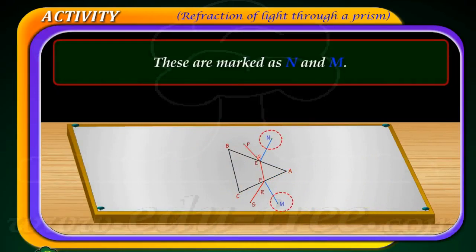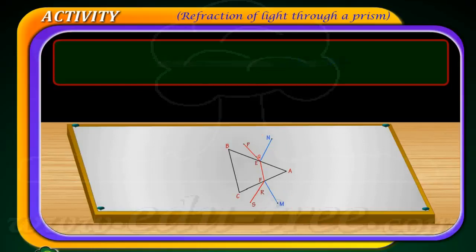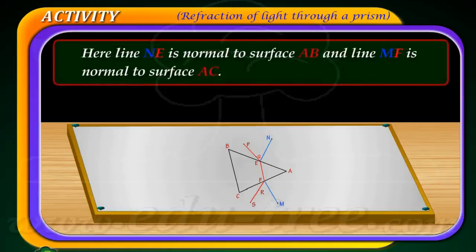These are marked as N and M. Here, line N E is normal to surface A B and line M F is normal to surface A C.